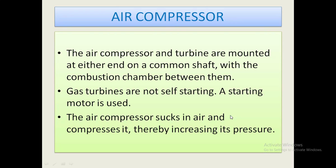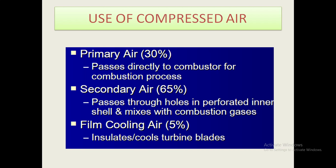Air compressor: the air compressor and turbine are mounted at either end on a common shaft with the combustion chamber between them. Gas turbines are not self-starting, so a starting motor is used. The air compressor sucks in air and compresses it, thereby increasing its pressure. Primary air (30%) passes directly to the combustion process. Secondary air (65%) passes through holes in the perforated inner cell and mixes with combustion gases. Film cooling air (5%) insulates or cools the turbine blades.